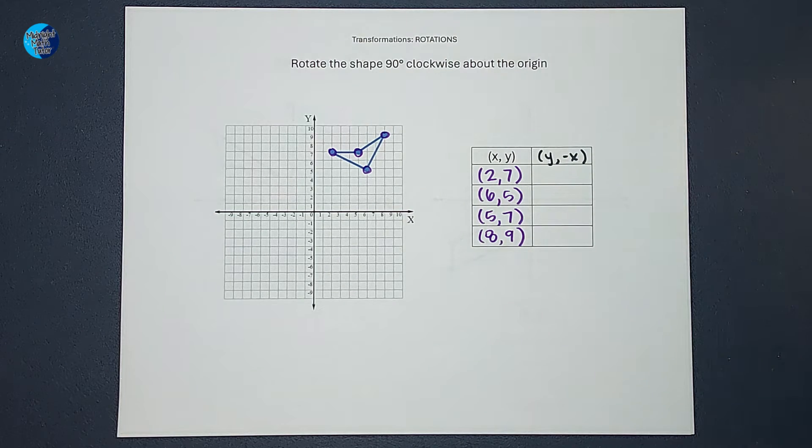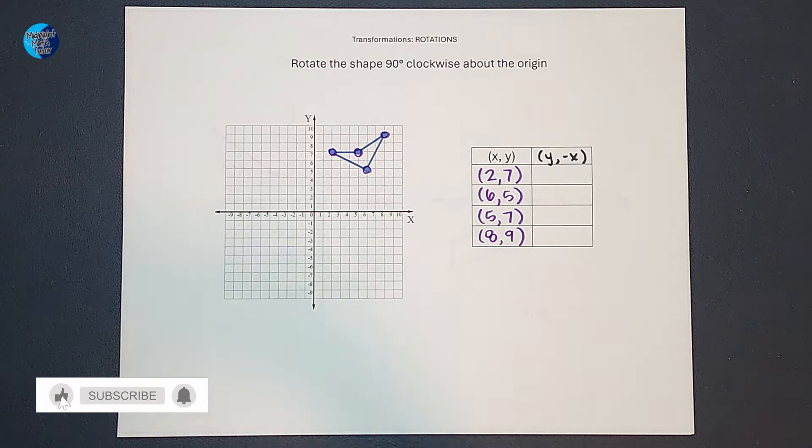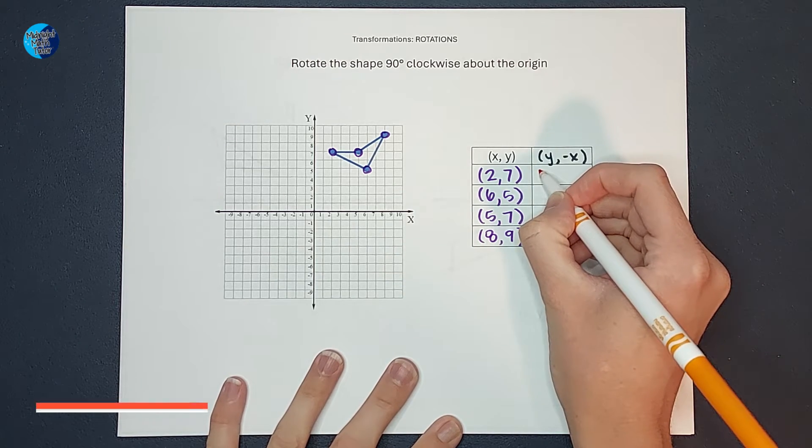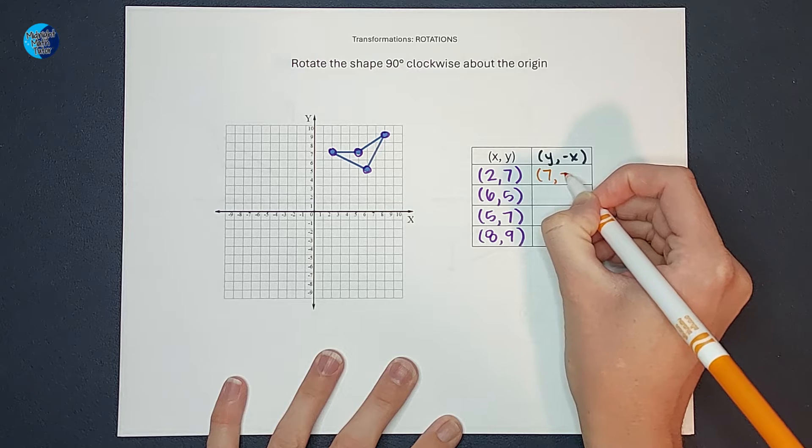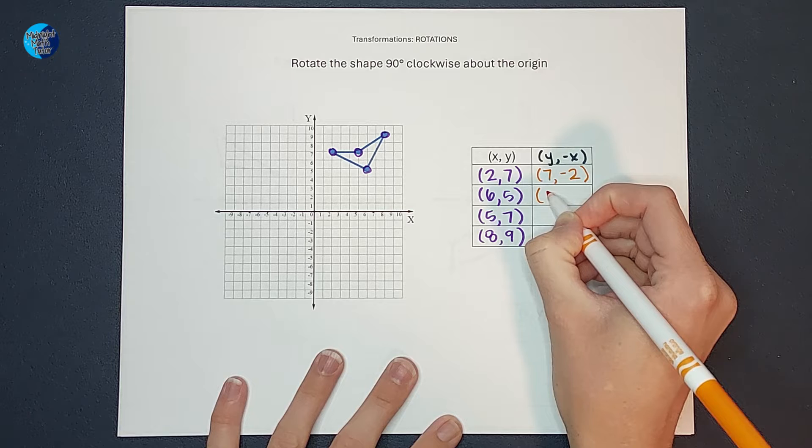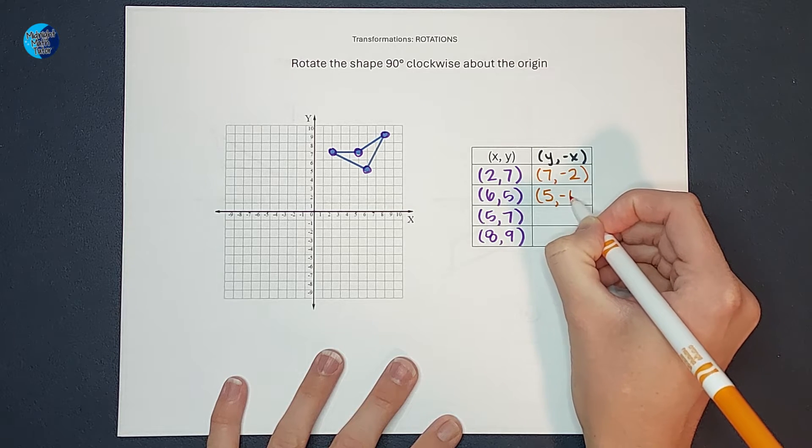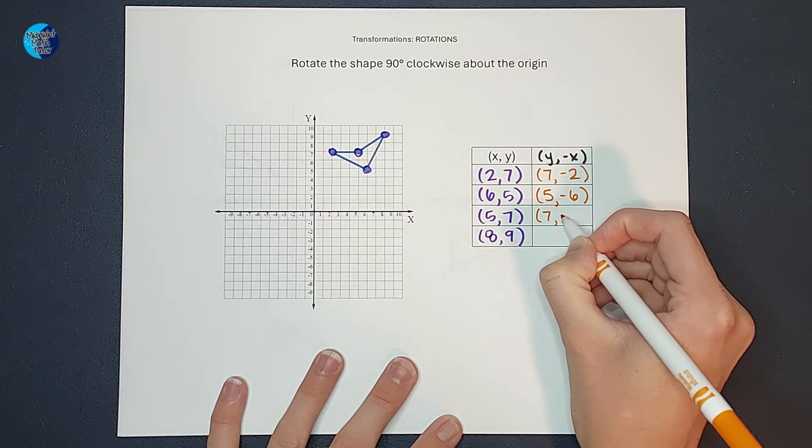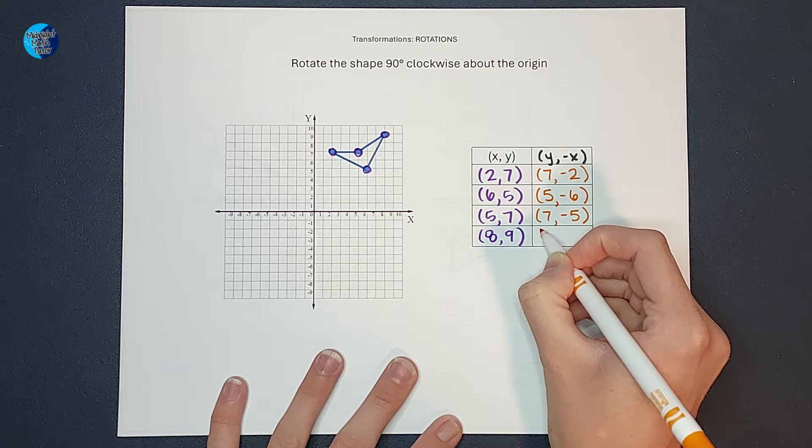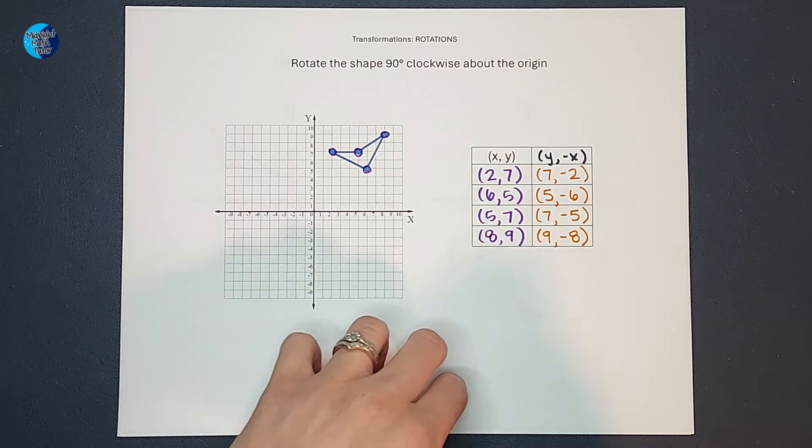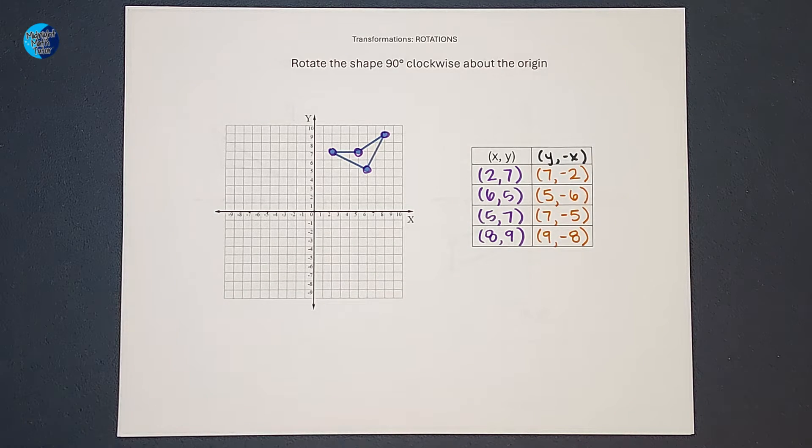Now what I'm going to do is switch them and change X's sign. So the point for my rotated shape is going to be seven, negative two. Then I'm going to switch them again, put Y first and change X's sign. So it's five, negative six, then seven, negative five, and nine, negative eight. If you're like, that seems really dumb, why can you do that? Stick around for the next two examples where it'll hopefully help you understand why we can do that.